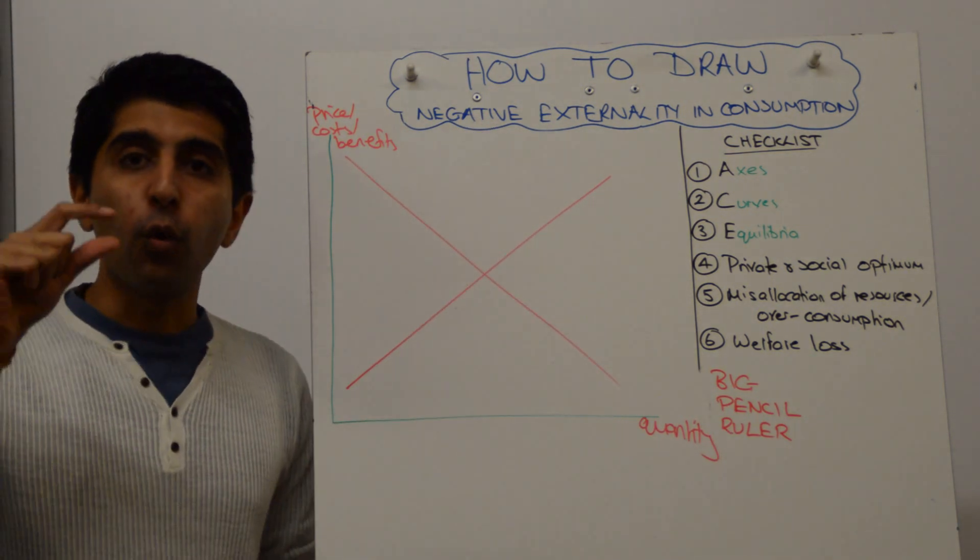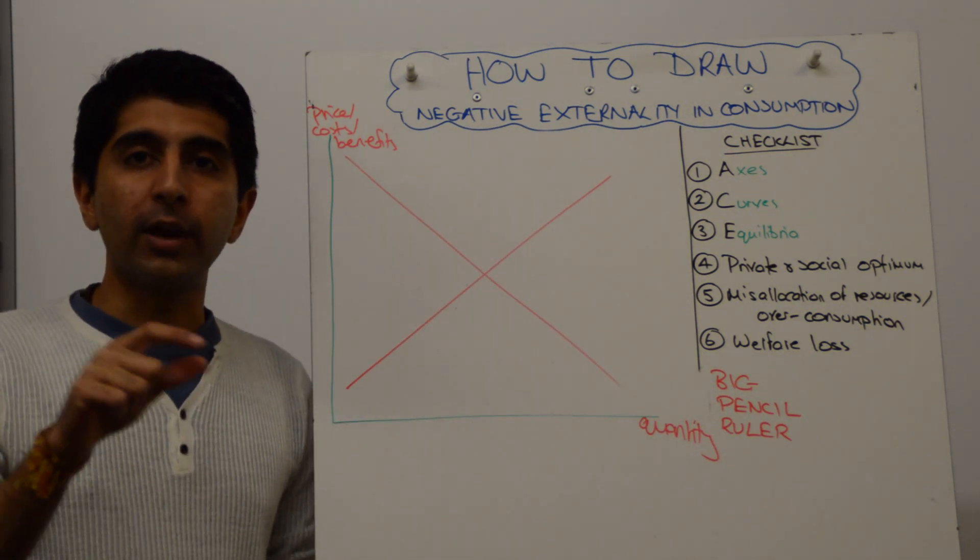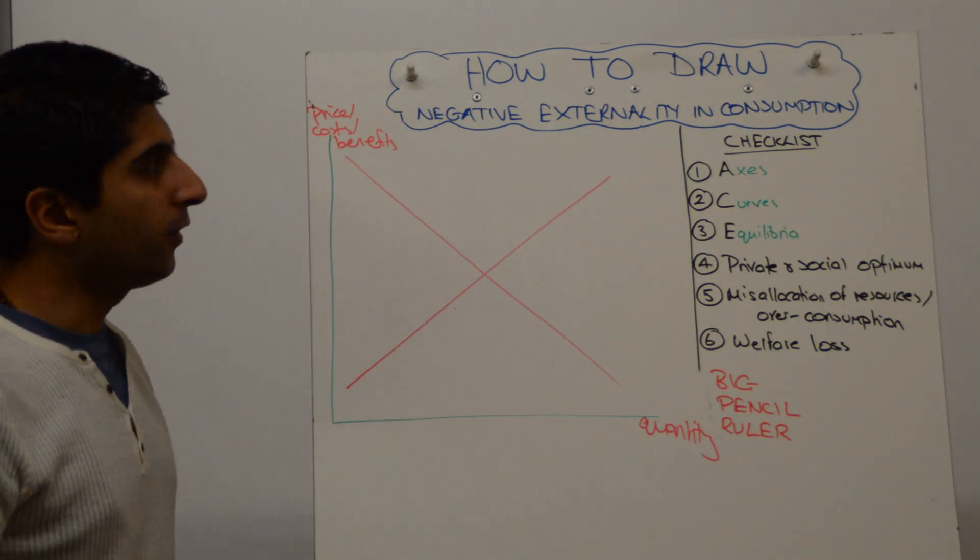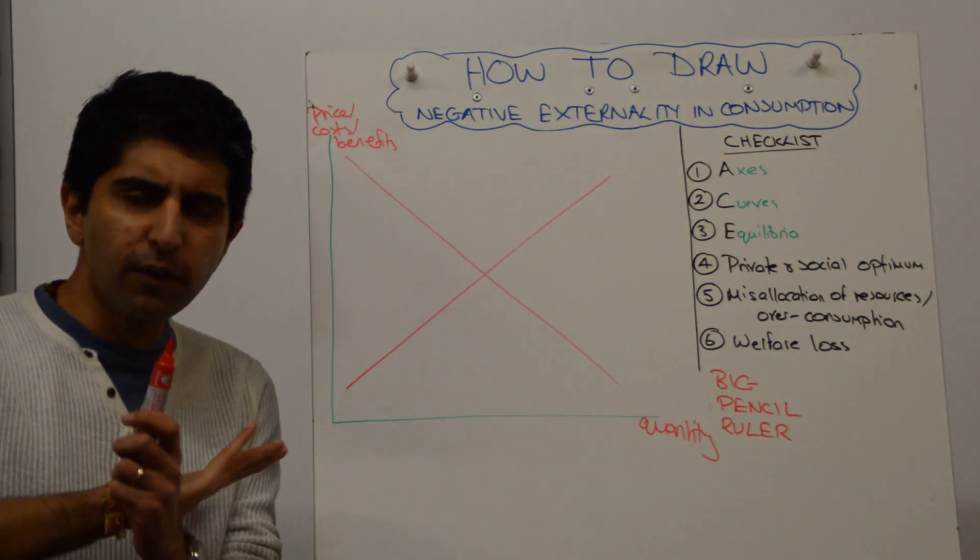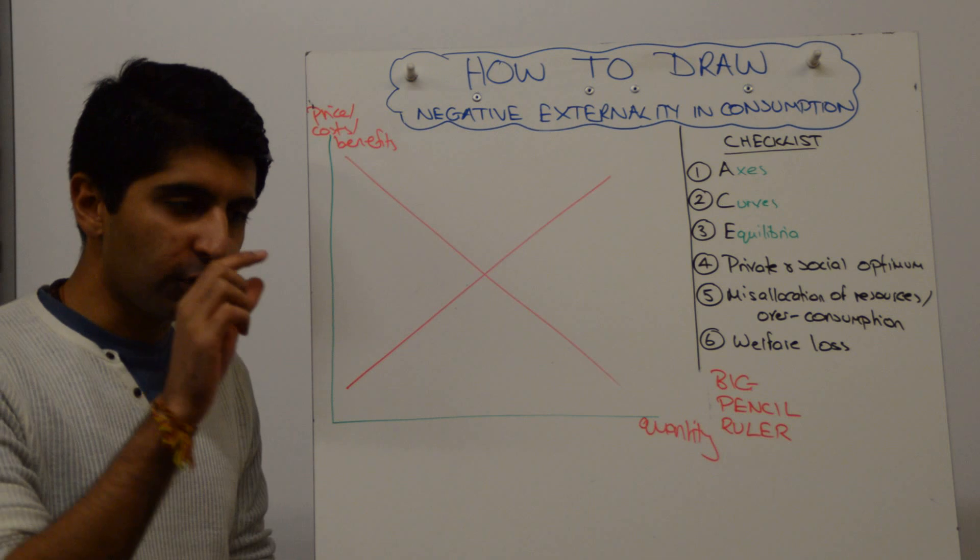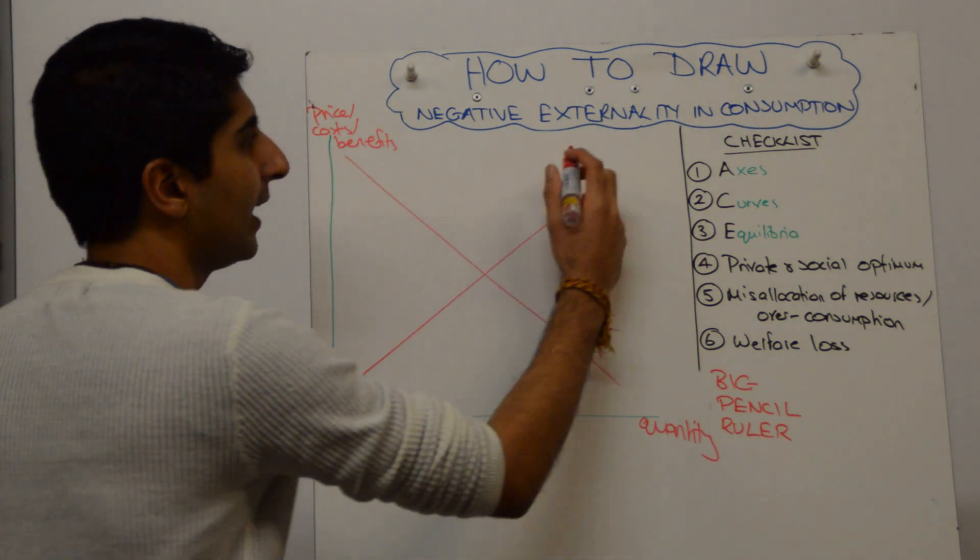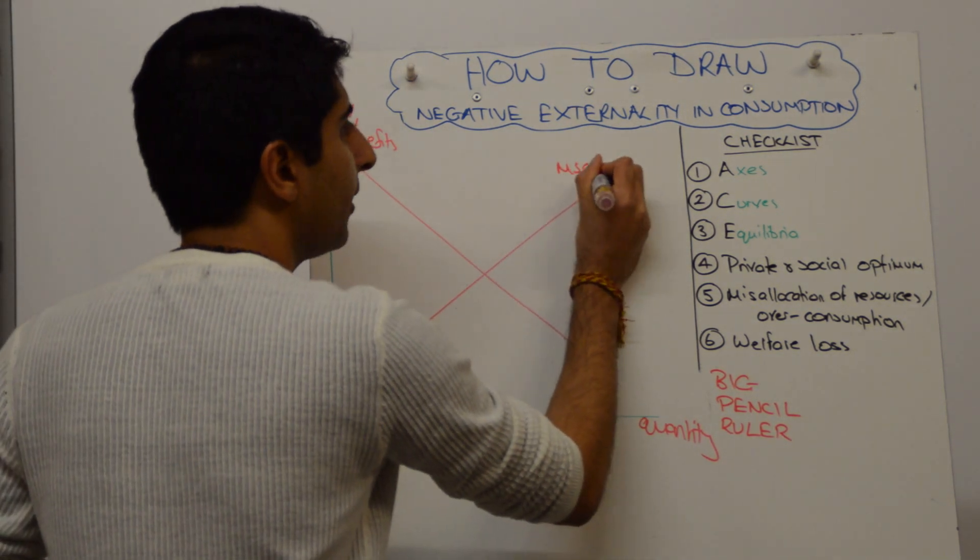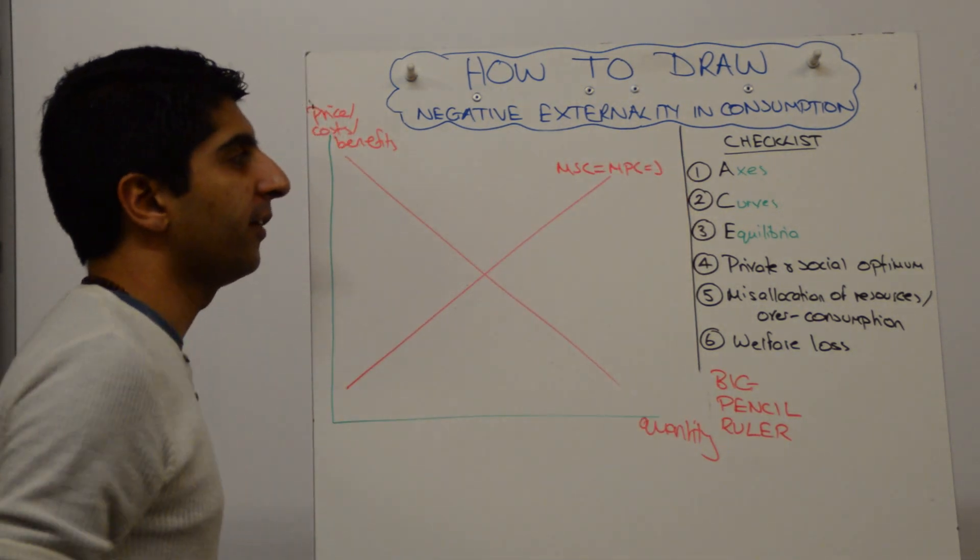Negative tells us where the social curve will be located in relation to the private curve. So if it's in consumption, the cost curves are staying exactly where they are. The social costs are equal to the private costs. We can label that. And label it fully. MSC is equal to MPC, which is our supply curve here.